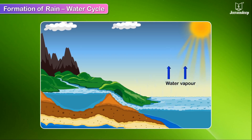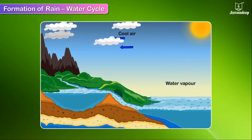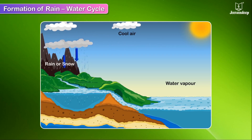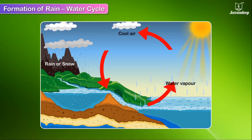This water vapor rises up. When it comes in contact with cool air high up or a mountain, it condenses to form tiny drops of water. These tiny drops join together to form clouds. As more drops join together, the clouds become heavy and come down in the form of rain or snow. The rainwater flows down into rivers, lakes, seas, and oceans, and then evaporates again. This cycle keeps going on in nature — this is called the water cycle.